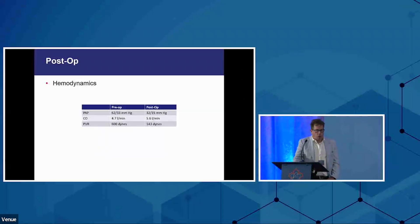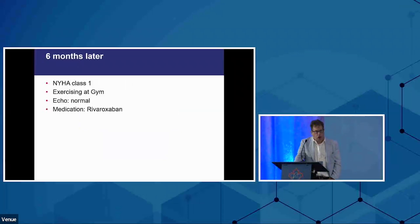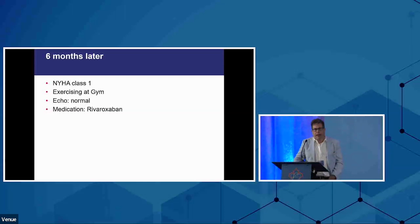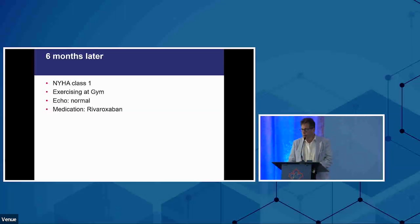After surgery — just two days post-op — her pulmonary pressures dropped from 60 systolic to 30, her cardiac output increased, and pulmonary vascular resistance fell to about a quarter of its previous value, well into the normal range. Six months later she was back exercising at the gym, just on her anticoagulants. This is not a typical case in that everything happened very quickly, but it shows the kind of results we can achieve when we diagnose and treat chronic thromboembolic disease.